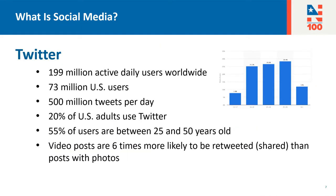Now we'll talk about Twitter. Twitter has 199 million active daily users worldwide, with 73 million of those in the U.S., and those users tweet out 500 million tweets per day. 20% of U.S. adults use Twitter, and 55% of those users are between 25 and 50 years old, a key demographic for NARF. On Twitter, posts with videos are six times as likely to get retweeted — which is the Twitter word for share — than posts with photos.